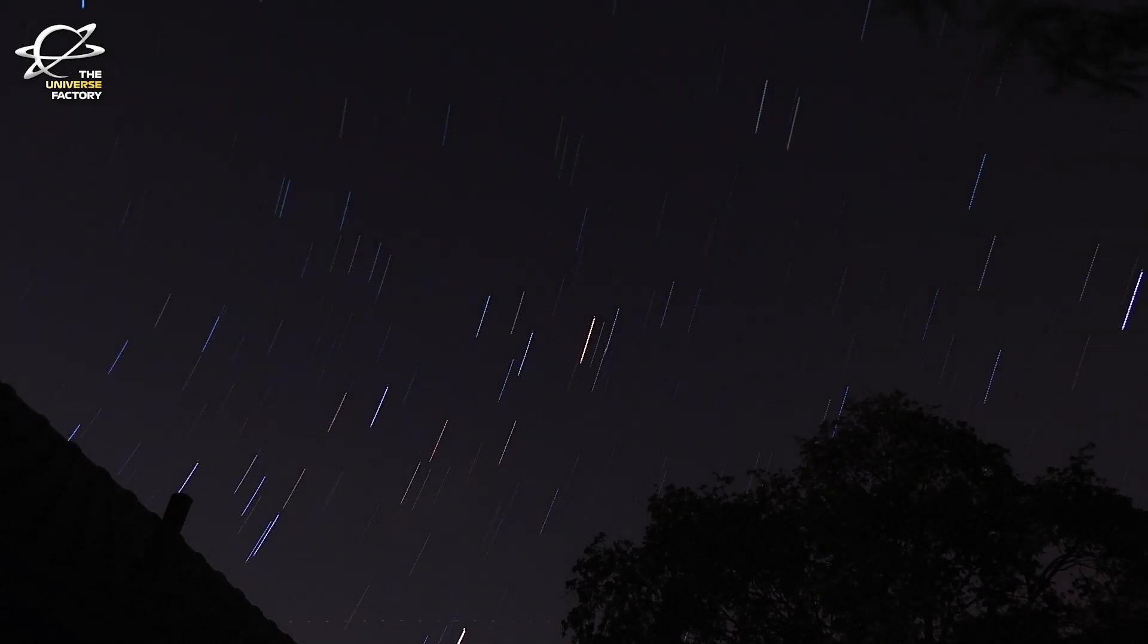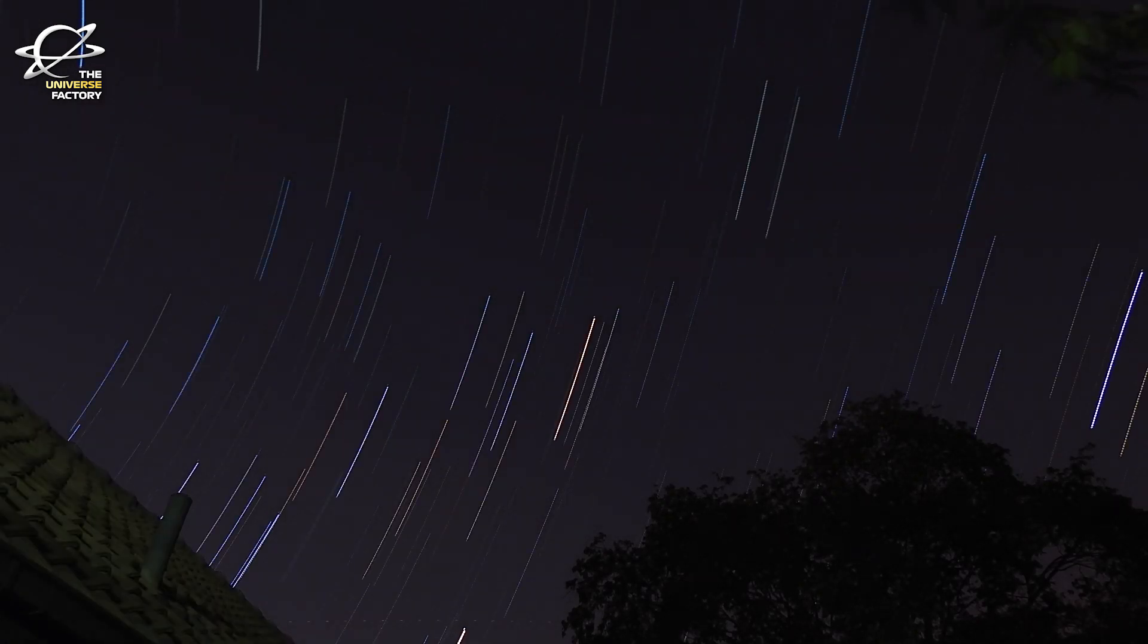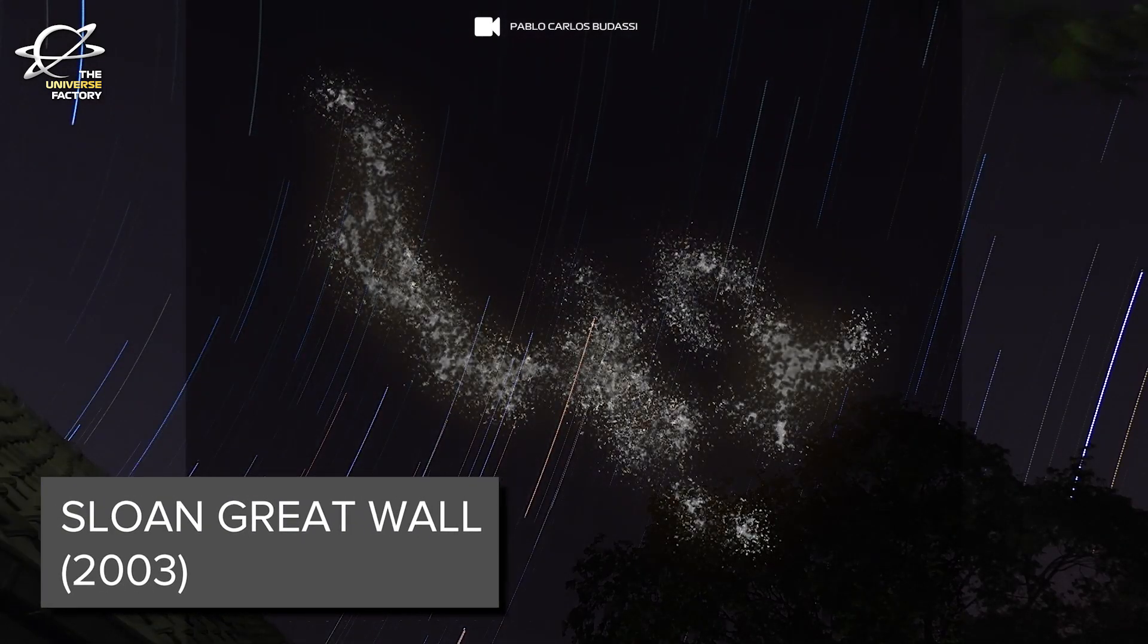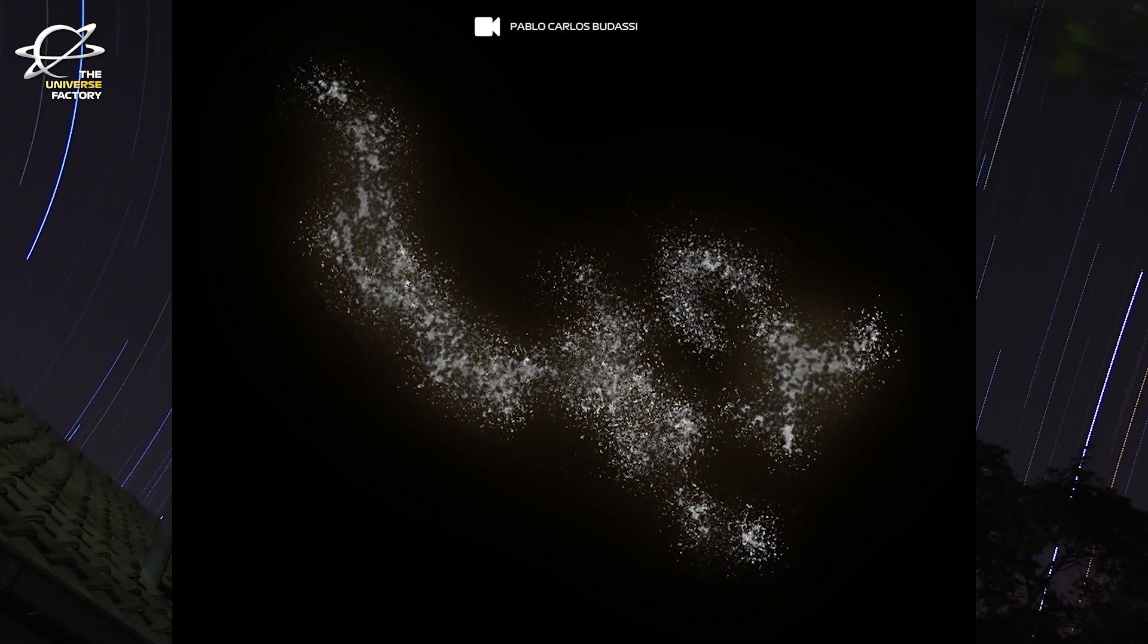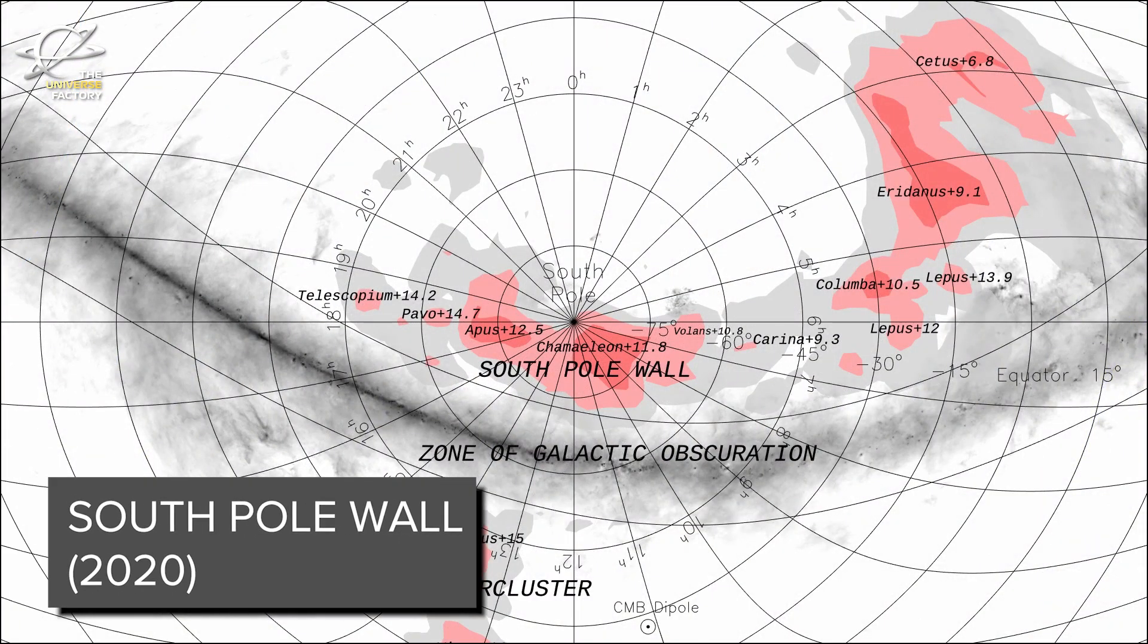There are also similarly large structures discovered by other cosmologists, such as the Sloan Great Wall, which is around 1.5 billion light years in length. Additionally, there is the South Pole Wall, which stretches 1.4 billion light years across.